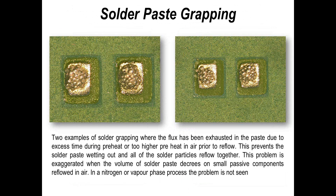One thing to consider once you achieve good printing results is the paste you're using. Most good quality paste from most suppliers today can handle convection reflow without nitrogen. But here are examples of what you might see with a convection process where the paste is a little exhausted. There is so little paste, so little flux, so little protective coating over the particles, that as you go through reflow you're burning off and exhausting the activators in the flux. Hence all the little balls stick together but don't actually reflow — this is called graping by some companies.